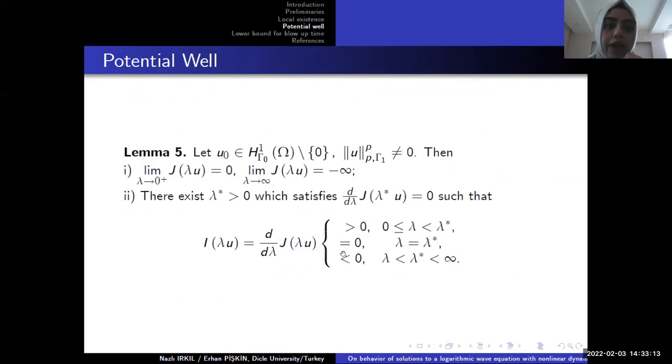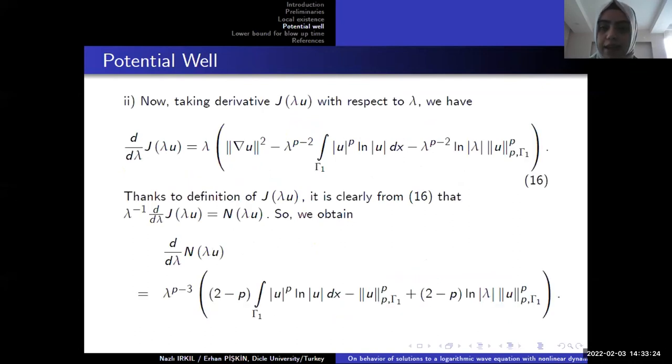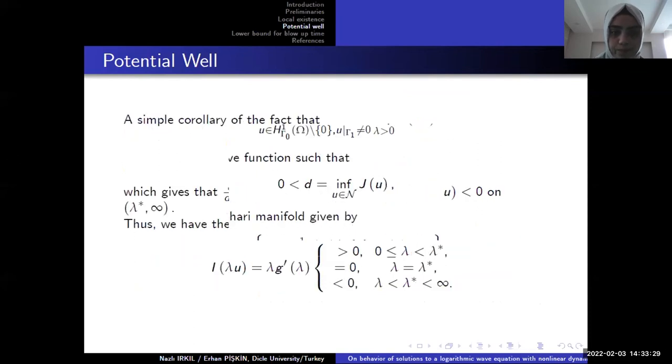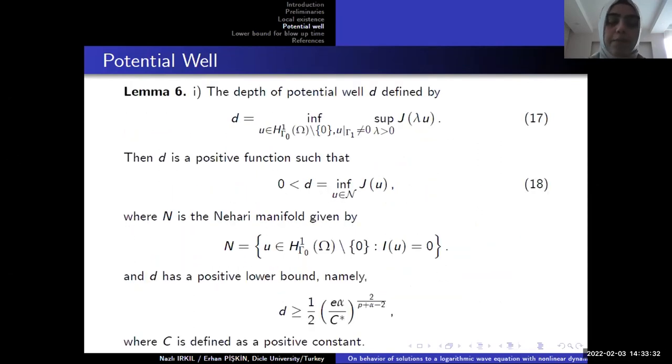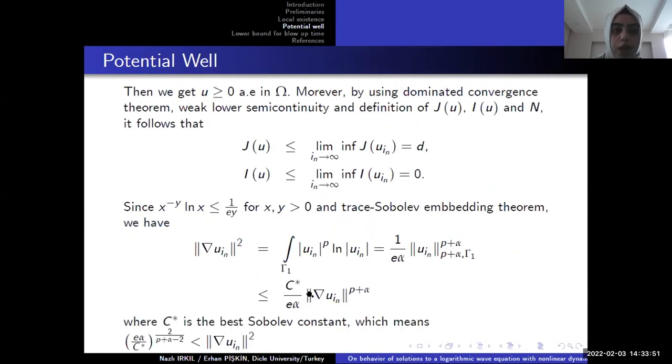Well, we have potential well depth. And in Lemma 5 we have four equations. Later we have a proof. You can see at least. I want to come to our blow-up results. And Lemma 6 is related with our potential well depth, and we prove that there is a positive constant and you can see the lower bound for d. And we have a proof.